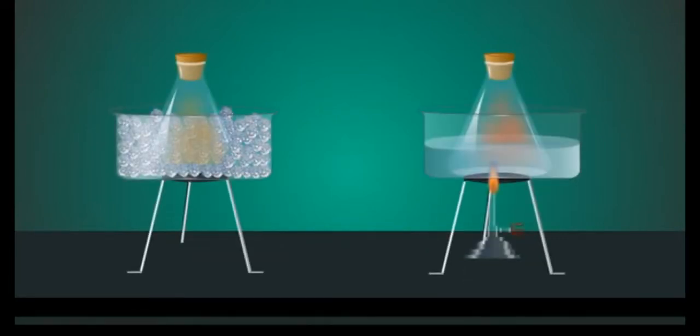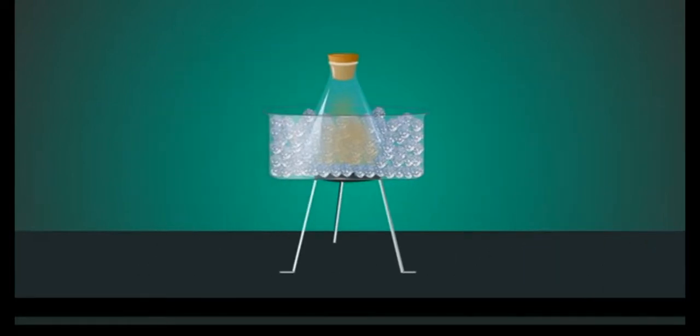Place the flask A in an ice bath and the flask B in boiling water as shown in the animation. At very low temperature, N2O4 is stable and exists as pure N2O4 colorless gas.